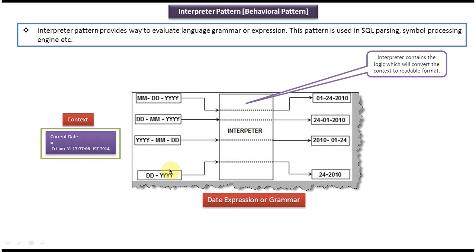Suppose I want month, date, year format. So what I have to do is pass this expression to the interpreter. Meaning this context date I want in mmddyy format.